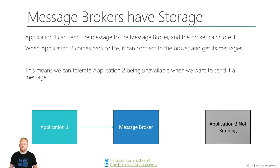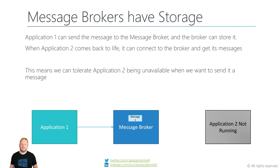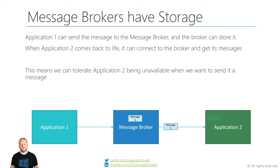We've already talked about how message brokers have storage. In this example, when application two is not running, application one can send messages to the broker. The broker can store them up and then when application two comes back to life it can connect to the broker and download the messages that are waiting for it. This means we can tolerate application two being unavailable when we want to send it a message, which gives us some reliability in terms of our processing.